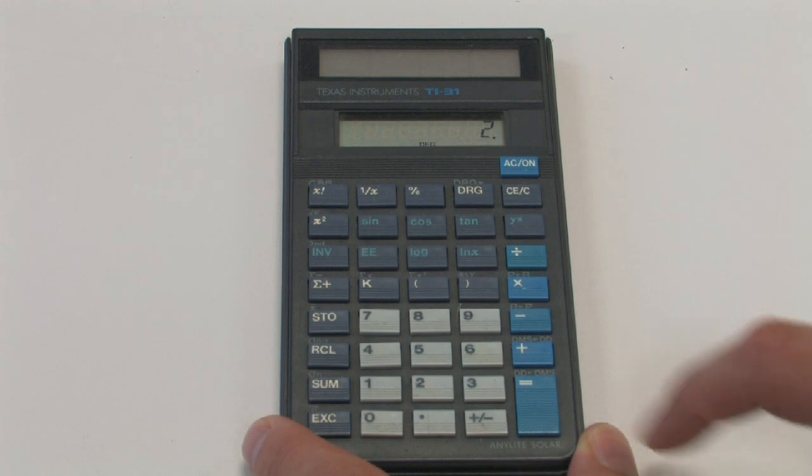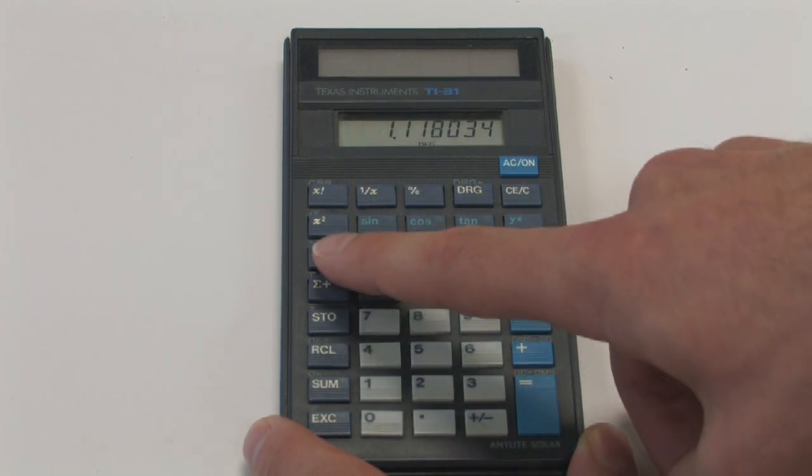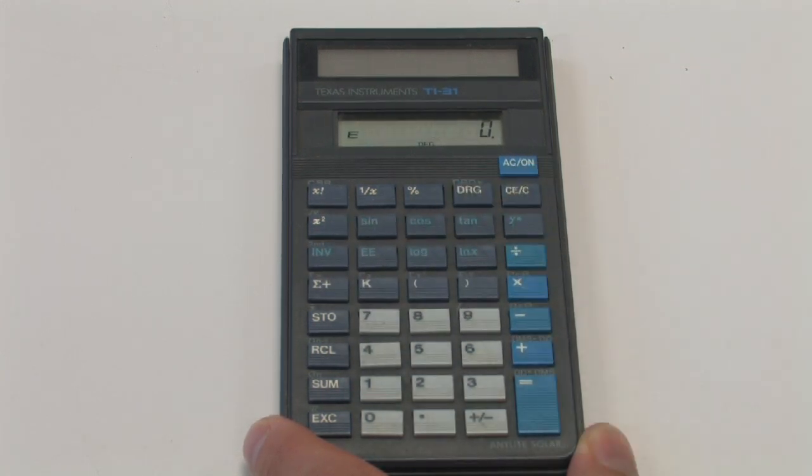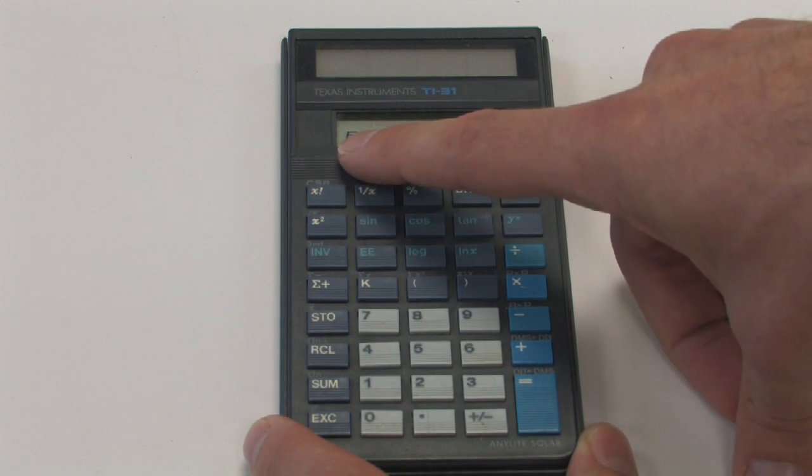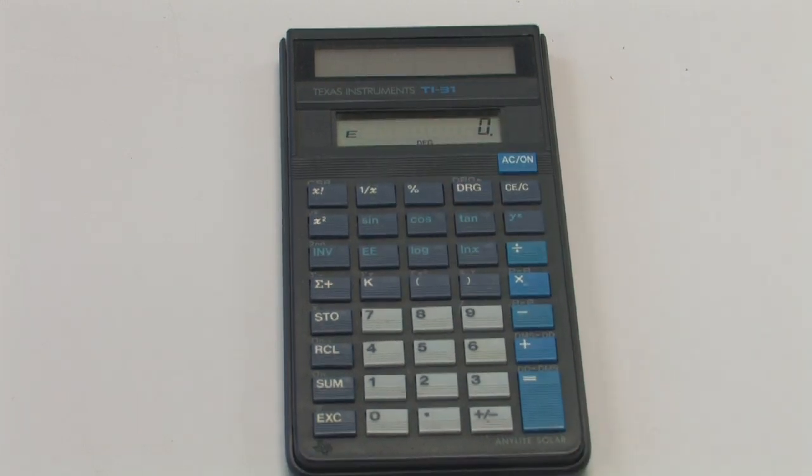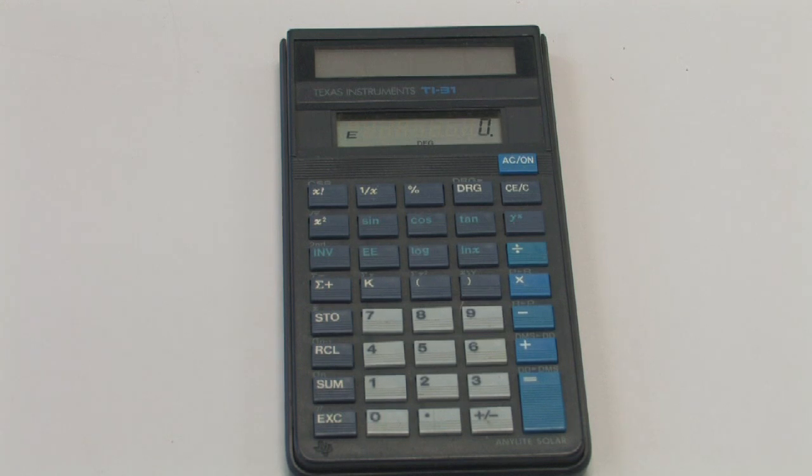and then we would do the inverse cosine. Notice that we get an error. That is because the square root of 5 over 2 is bigger than 1. It is not included in the domain of inverse cosine.